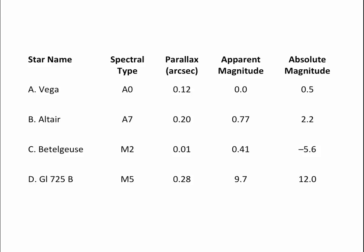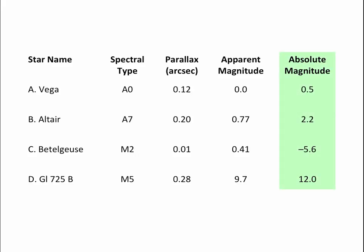Here are a couple of questions. Which of these stars would appear brightest in our night sky? To determine which star appears brightest, we use the apparent magnitude, and the smallest number is the brightest star — so that would be Vega. Which star is actually the most luminous — putting out the most energy? For that we look at the absolute magnitude, and the most negative value, minus 5.6, belongs to Betelgeuse. So Betelgeuse is the brightest of these stars in terms of total energy output.